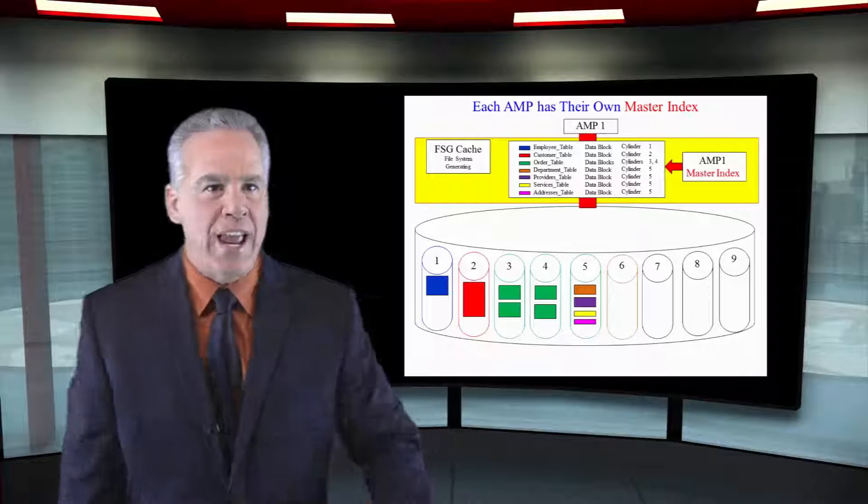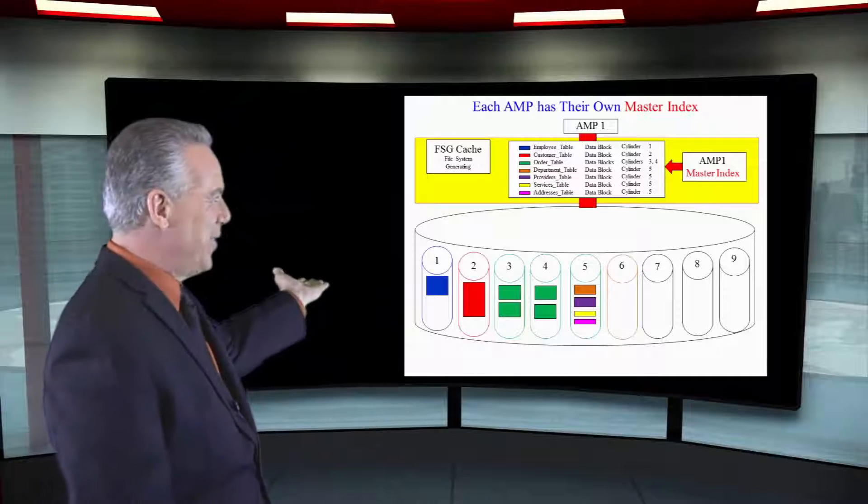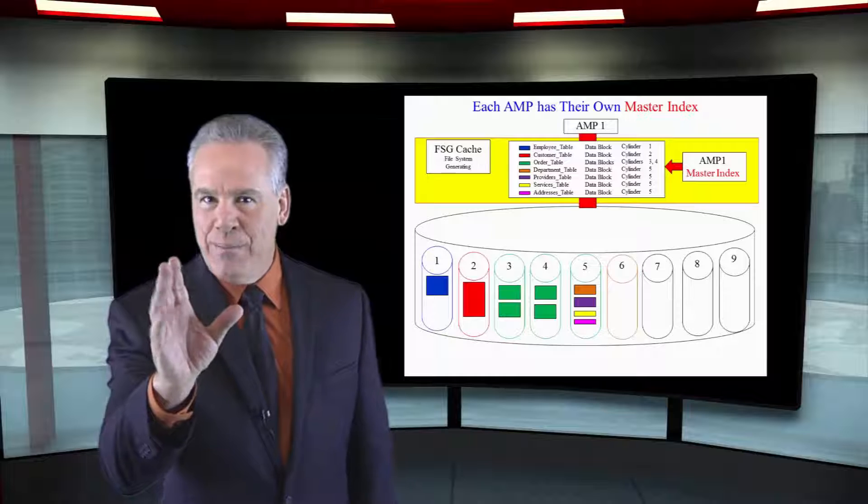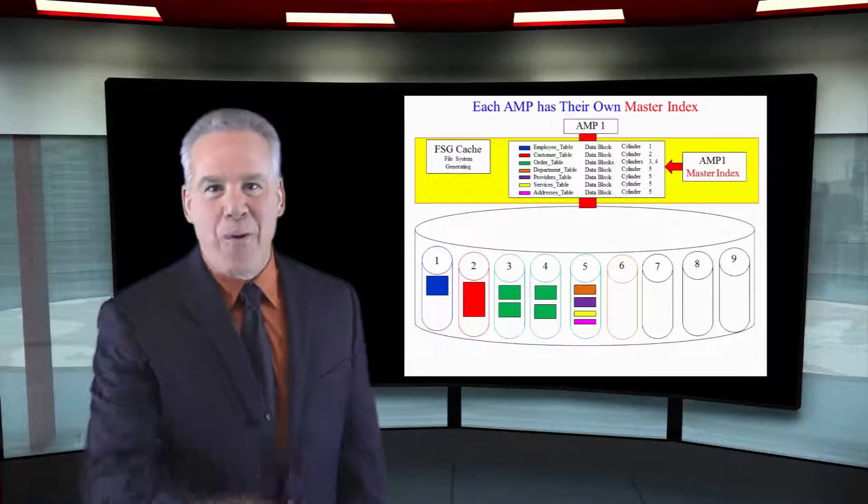We've got our employee table in cylinder one. We've got our customer table in cylinder two. Our addresses table, that's in cylinder five with other tables. And our order table. Come on. Did you nail this? Three and four.